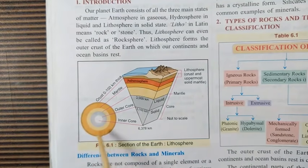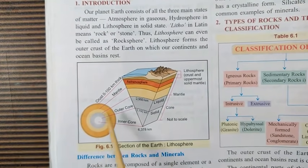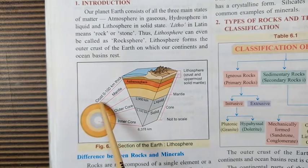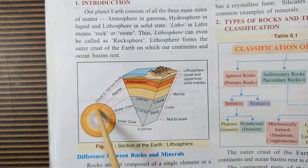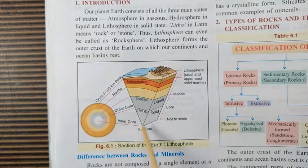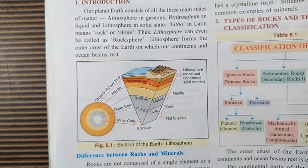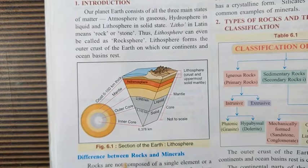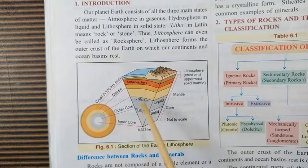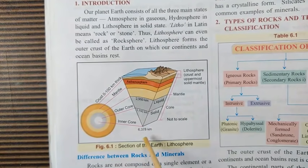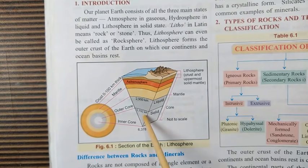You have already studied the interior structure of the earth. There is the crust, then the mantle, then the outer core and inner core. The thickness of the inner core starts from 5,100 kilometers to 6,378 kilometers. The inner core is a very solid part.